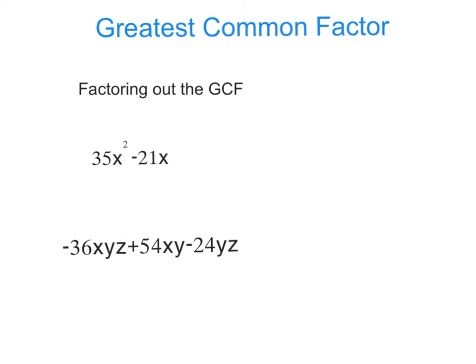Then, we have to factor out the greatest common factor. So, if we look at our first example here, we have 35x squared minus 21x. Now, knowing what we know before, our greatest common factor is going to be 7x because 35 and 21 are both divisible by 7. And there's 2x's here, 1x here, so I take 1 out.